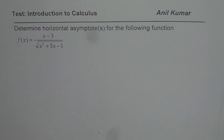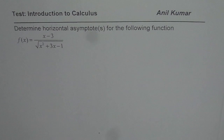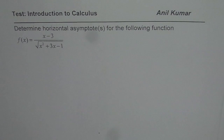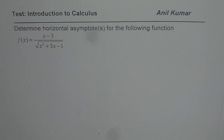I'm Anil Kumar and here is my favorite test question on introduction to calculus. The question is: determine horizontal asymptotes for the following function, f(x) equals x minus 3 divided by the square root of x squared plus 3x minus 1. You can pause the video and answer the question — those of you who have watched my videos carefully can definitely answer this.